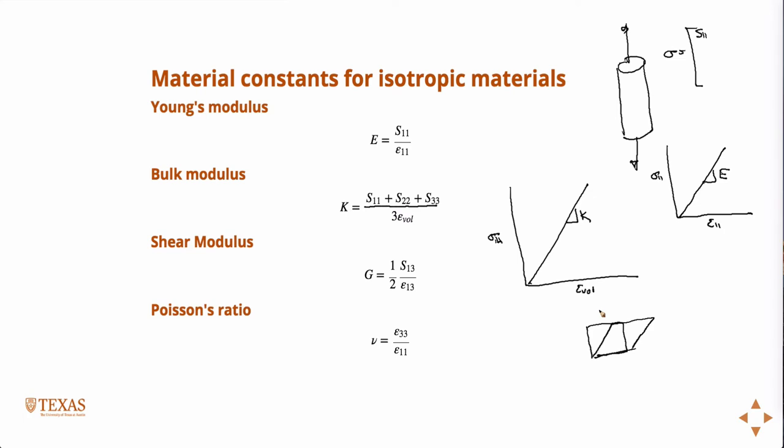If the bulk modulus is the material's resistance to volume change, then the shear modulus is the material's resistance to shape change. Under pure shear, the material doesn't change volume at all. It only changes shape.